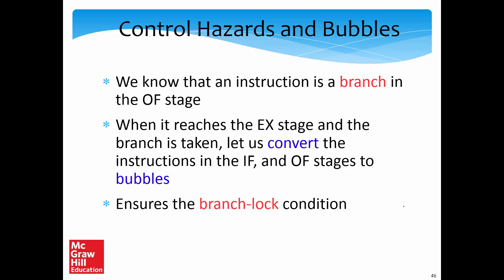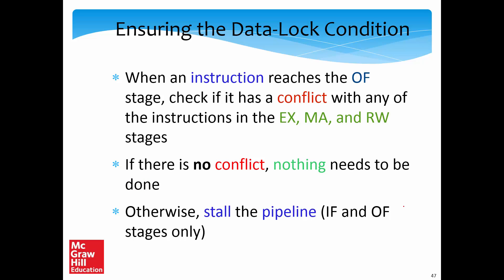For control hazards and bubbles: we know an instruction is a branch in the OF stage. When it reaches EX and the branch is taken, we convert instructions in IF and OF stages to bubbles — this ensures the branch lock condition, preventing wrong-path instructions from executing. For the data lock condition: when an instruction reaches the OF stage, we check if it has a RAW conflict with any instruction in EX, MA, or RW stages. If no conflict, nothing needs to be done. Otherwise we stall the IF and OF stages only until the correct data is available.